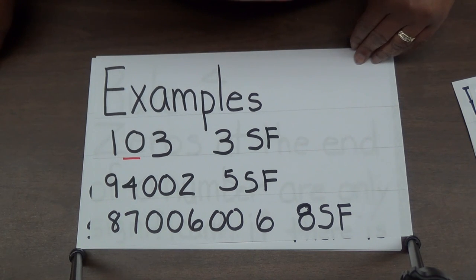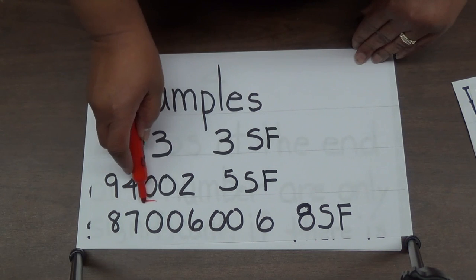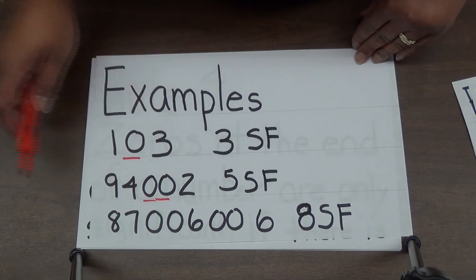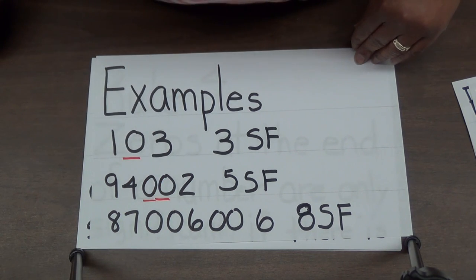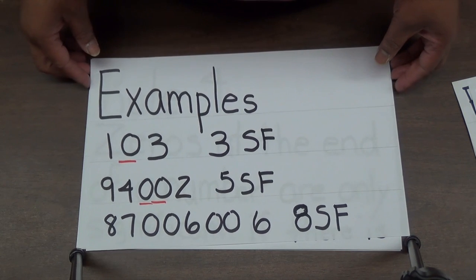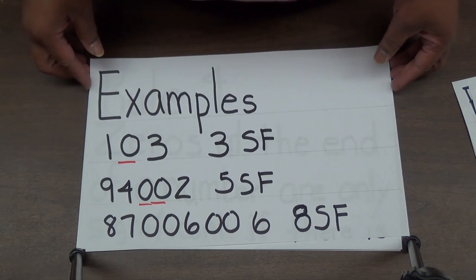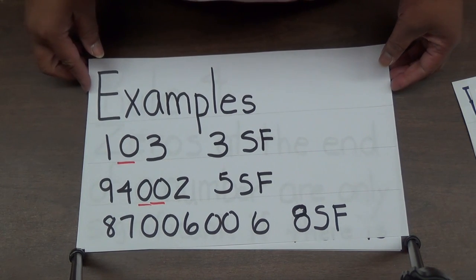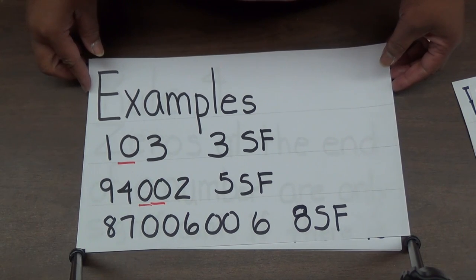The number 94002 has two zeros. They are both trapped in between the 4 and the 2, so they are significant — it has five significant figures. And 87006006 has eight significant figures. It does not matter how many zeros are trapped; if they are in between two nonzero digits, they are significant.